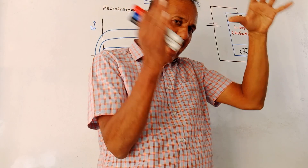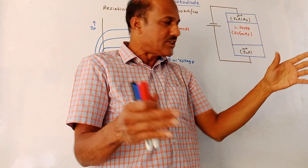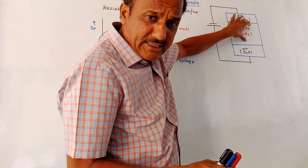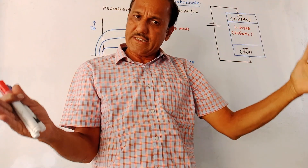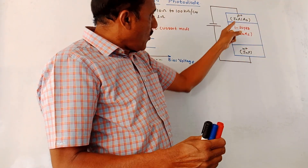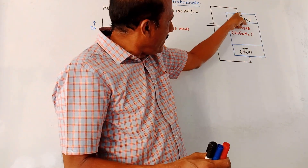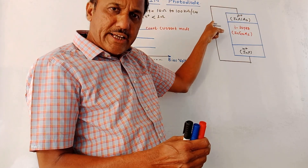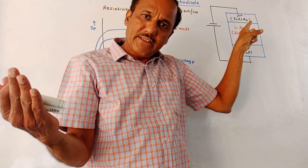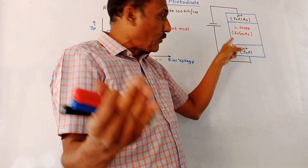Due to the I layer, the width of the depletion region is increased. Whenever light falls on this I layer, electron-hole pairs are generated. Whatever holes are generated will be attracted towards the negative terminal of the battery, same as in the conventional PN junction photodiode.